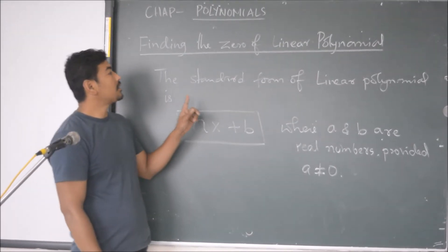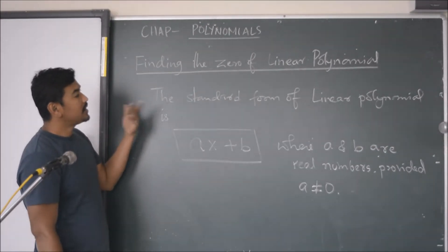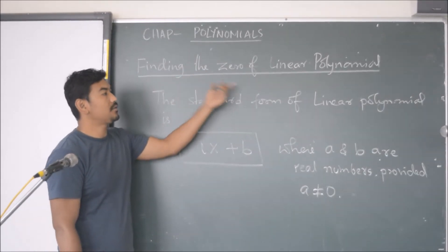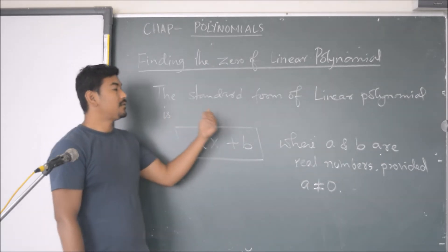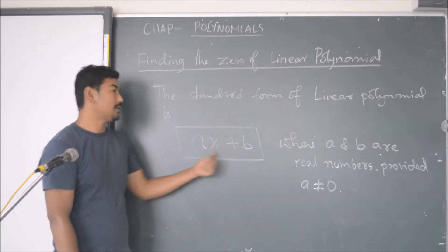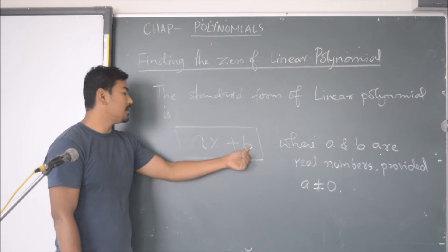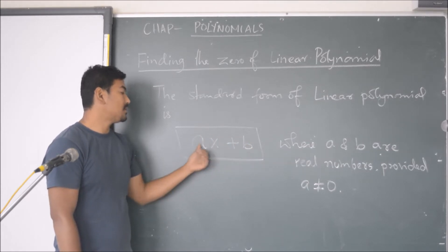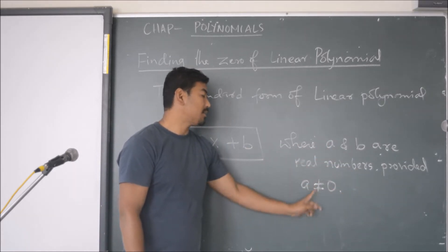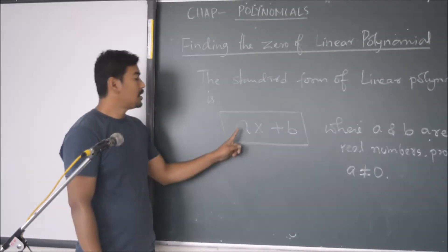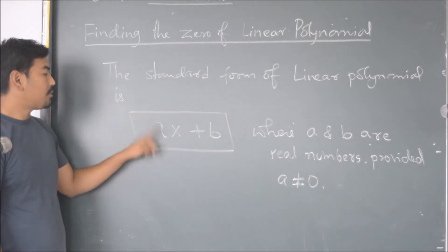Here I have taken linear polynomials. Our intention is to find the zeros of linear polynomials. The standard form of a linear polynomial looks like ax plus b, where x is a variable and a and b are real numbers, provided a should not be equal to 0. If a equals 0, the polynomial will no longer be a linear polynomial.